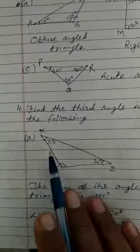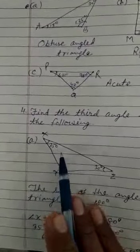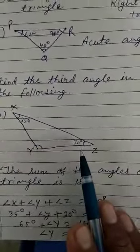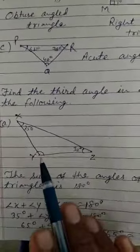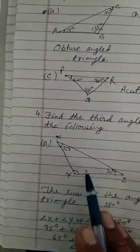In triangle XYZ, angle X is 35 degrees, angle Z is 30 degrees, and angle Y is not given. In any triangle, if two angles are given and one angle is not given, you can find the third angle.